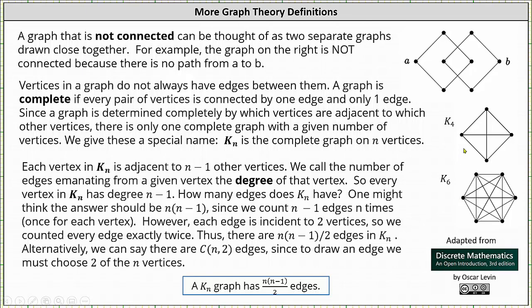Notice each pair of vertices is connected by one edge and only one edge. Each vertex in K_n is adjacent to n minus one other vertices. We call the number of edges emanating from a given vertex the degree of that vertex. So every vertex in K_n has degree n minus one. Notice in the graph of K_4, each vertex has degree three. And in the graph of K_6, each vertex has degree five.